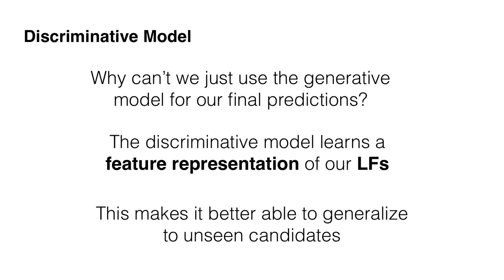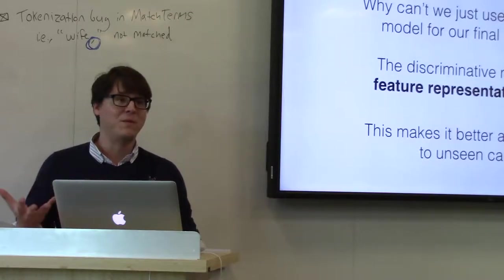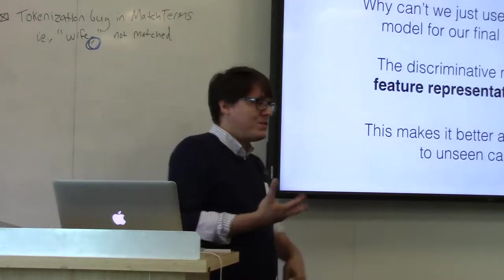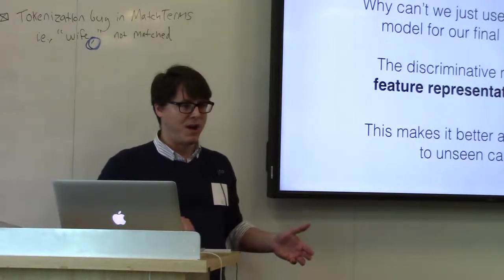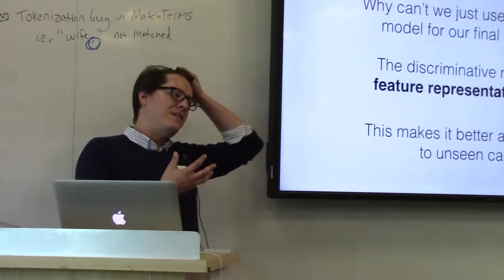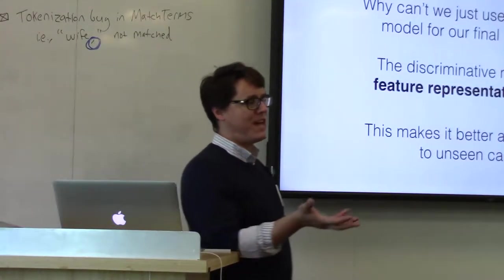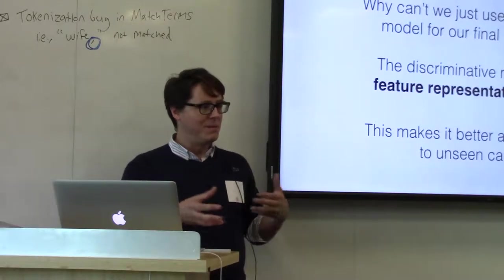The number one question everyone asks about Snorkel is: why can't we just use the generative model as our classifier? We write a bunch of labeling functions, we generate a probability of being a true candidate — isn't that enough? You can use it as a classifier, but the advantage of data programming in Snorkel is that labeling functions encode a bunch of information. With 10 or 20 labeling functions you can make predictions over some coverage of candidates, but you're limited by what the labeling functions touch.